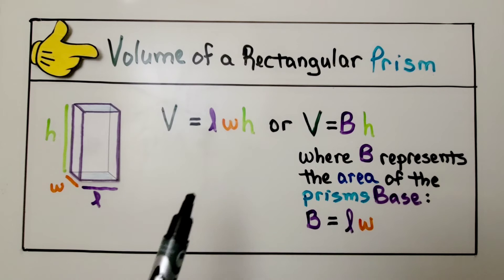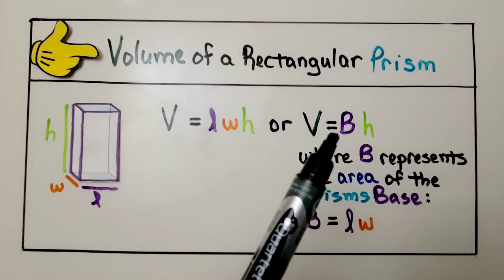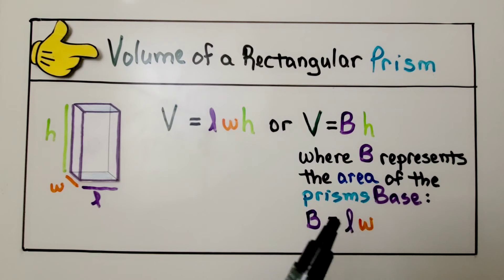Now we also saw that we can use V, the volume, is equal to the base times the height, as the length and width for the base. So let's see how to do that one.